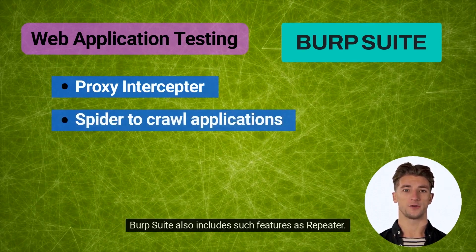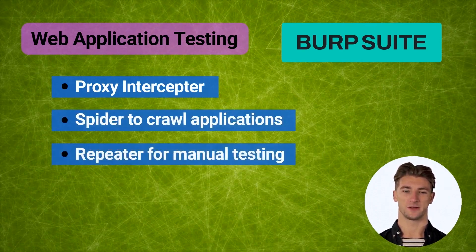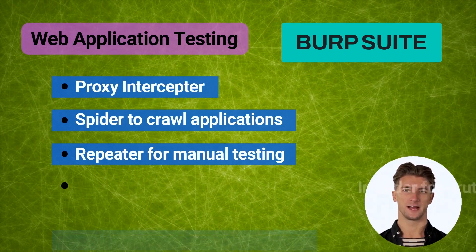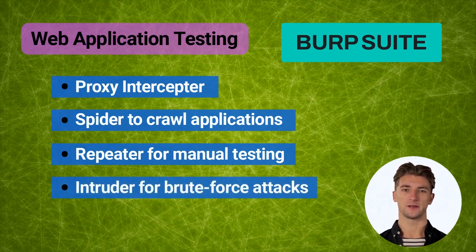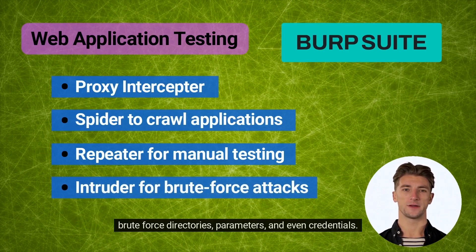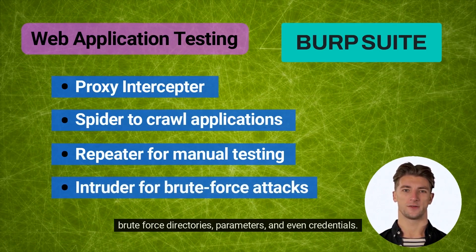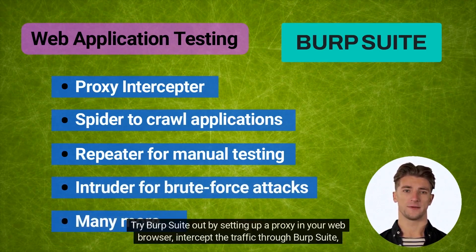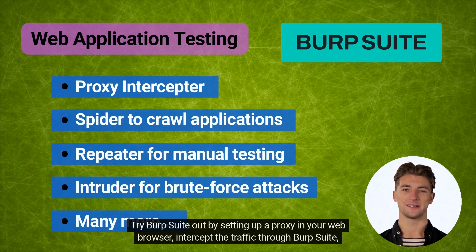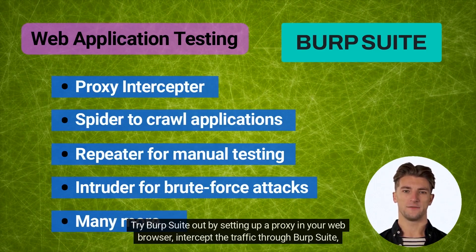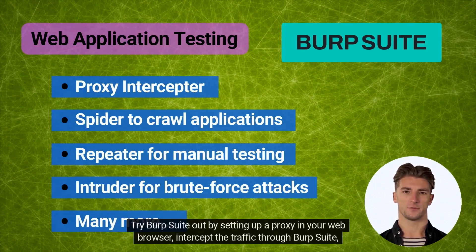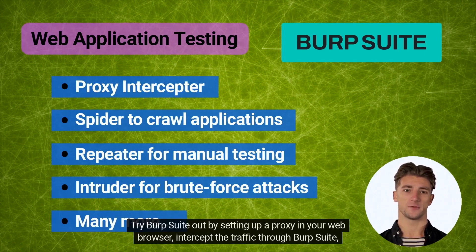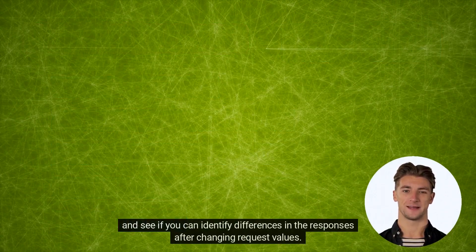Burp Suite also includes features such as Repeater, which can be used for manually testing payloads, and Intruder, which can brute force directories, parameters, and even credentials, plus many more. Try Burp Suite out by setting up a proxy in your web browser, intercepting the traffic through Burp Suite, and see if you can identify differences in the responses after changing request values.